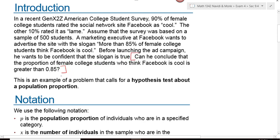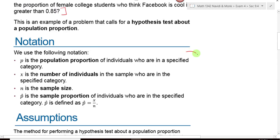This is an example of a problem that calls for a hypothesis test about a population proportion. The notation that we use here is exactly the same as it was for the confidence intervals. P is the population proportion, X is the number of individuals that fit into a category—we'll call those successes. N is your sample size. P hat is your sample proportion, your number of successes divided by the number of trials.